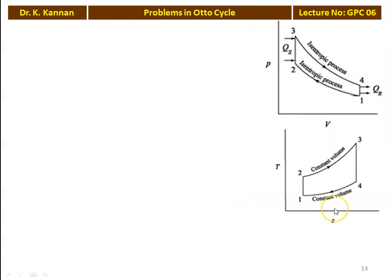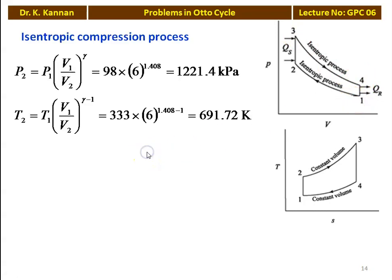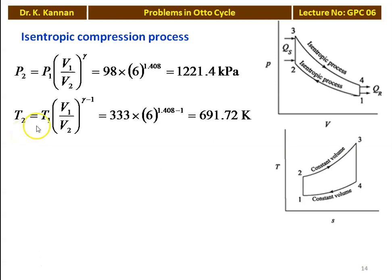The PV and T-s diagrams of the Otto cycle show: 1 to 2 isentropic compression, 2 to 3 constant volume heat addition, 3 to 4 isentropic expansion, 4 to 1 constant volume heat rejection. For isentropic compression: P2 equals P1 × (V1/V2)^gamma equals 98 × 6^1.408 equals 1221.4 kPa. T2 equals T1 × (V1/V2)^(gamma-1) equals 333 × 6^0.408 equals 691.72 Kelvin.